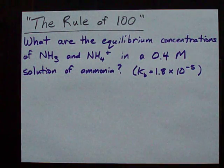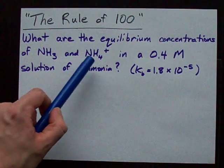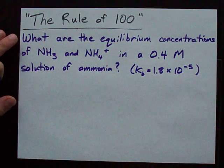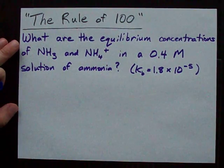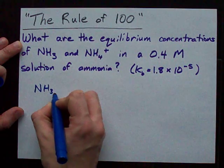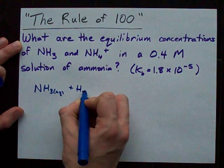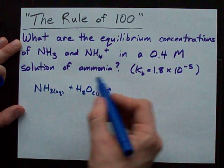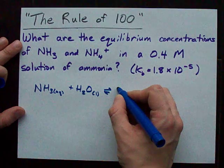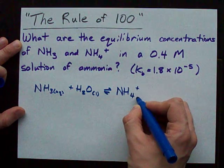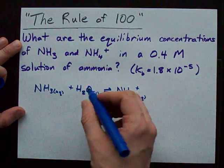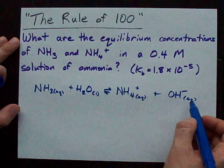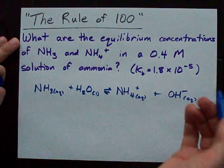So first of all we're asked for the equilibrium concentrations of ammonia and ammonium in a 0.4 molar solution of ammonia. What chemistry is happening here? Well they gave us Kb. That's my hint that we're going to have NH3 reacting with water, liquid water, and because they gave us Kb I'm going to assume that ammonia acts as a base so it steals a proton or H plus away from water and leaves an OH minus behind.